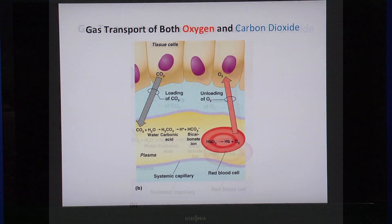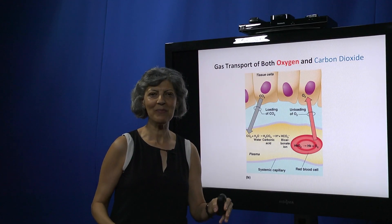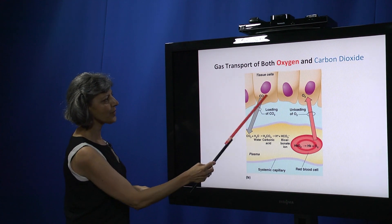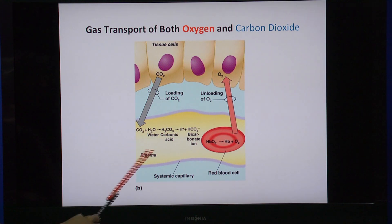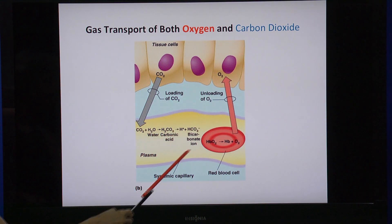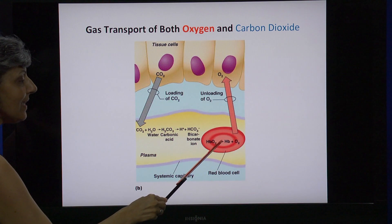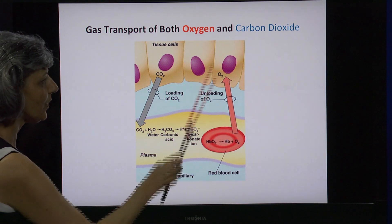It's important to see the combined picture — in the body everything happens at the same time. The tissues are unloading their carbon dioxide to the blood, mainly to the plasma, carried in the form of bicarbonate, while oxygen is carried as oxyhemoglobin on the red blood cells and diffuses to the tissues simultaneously.